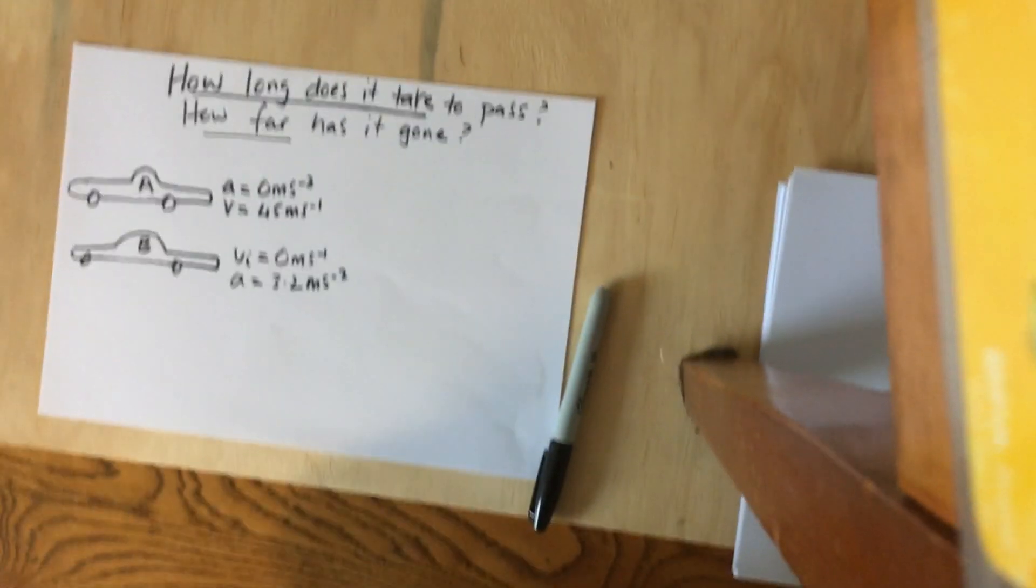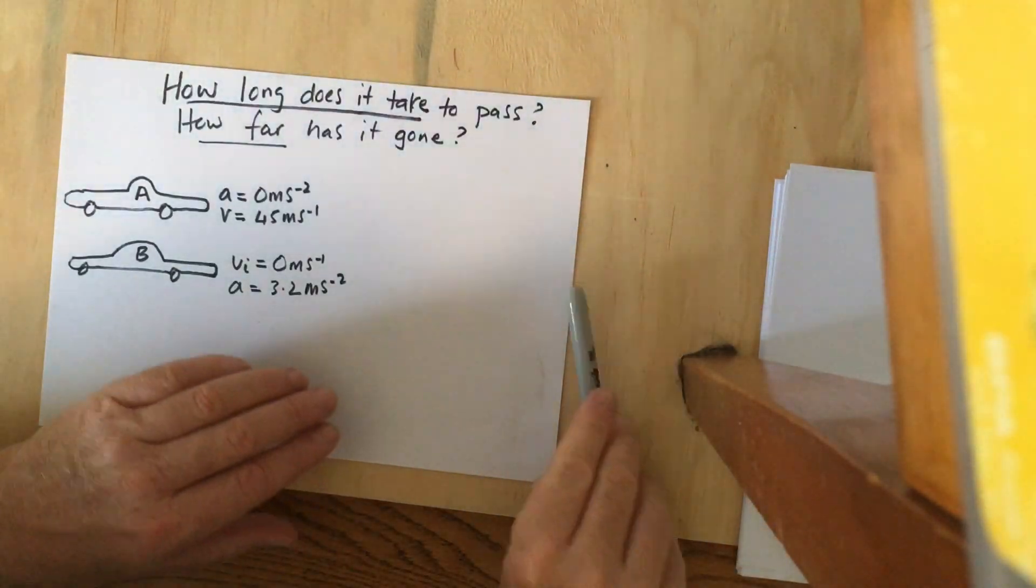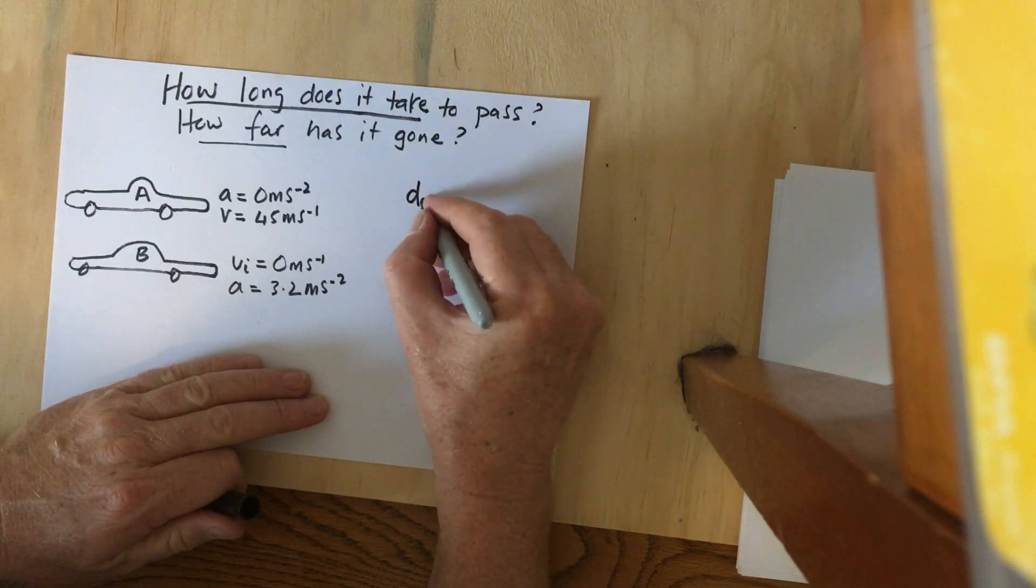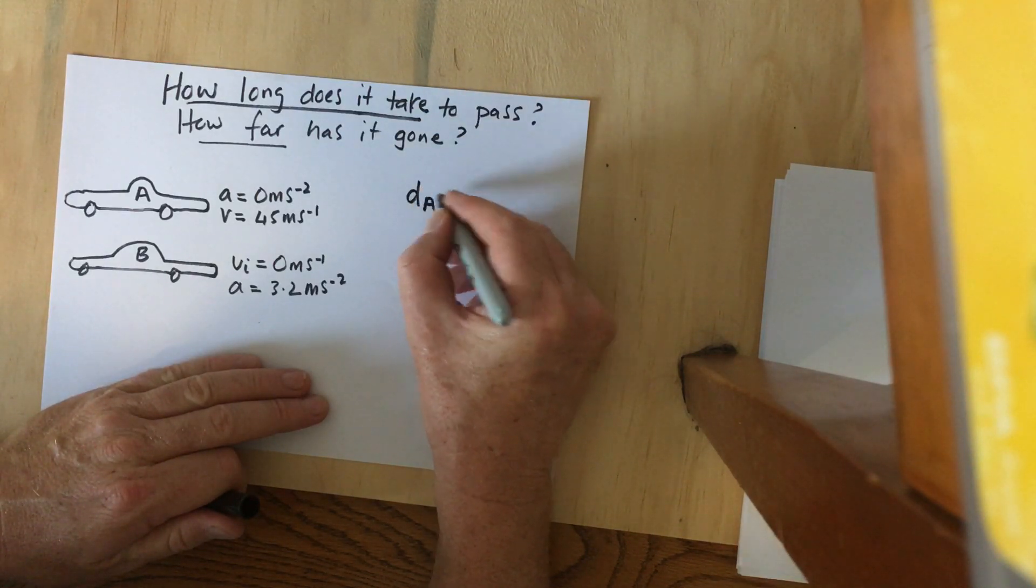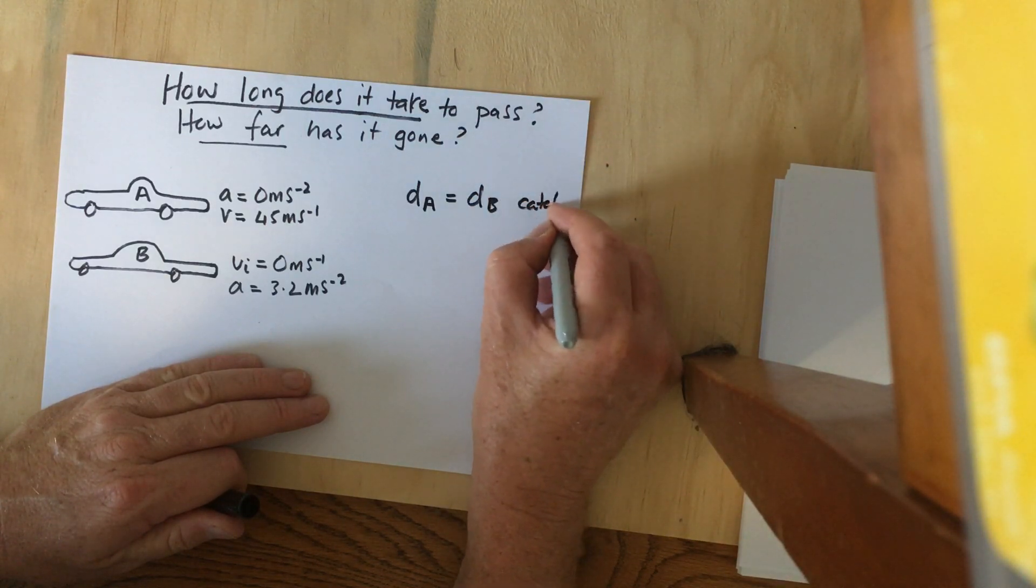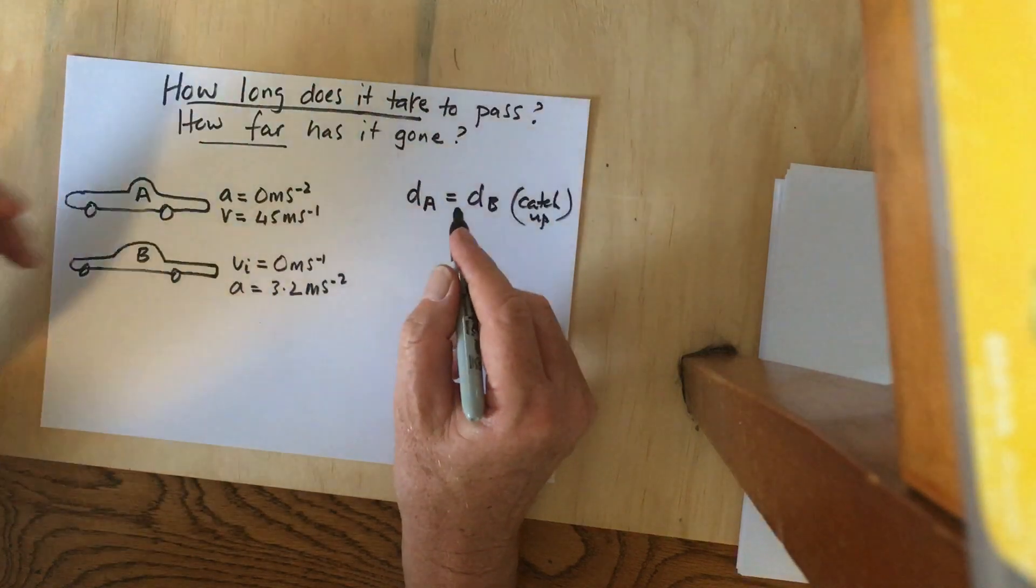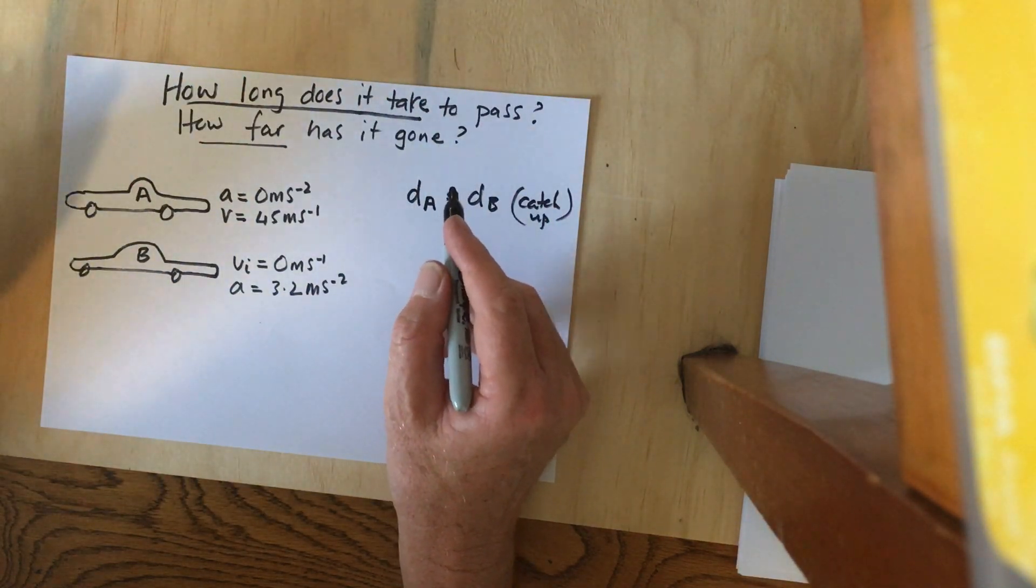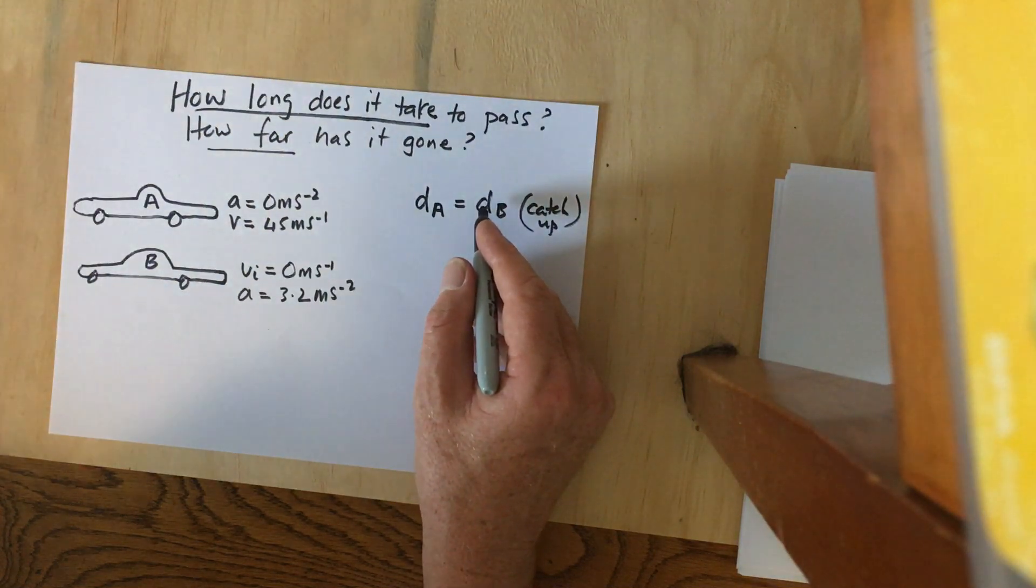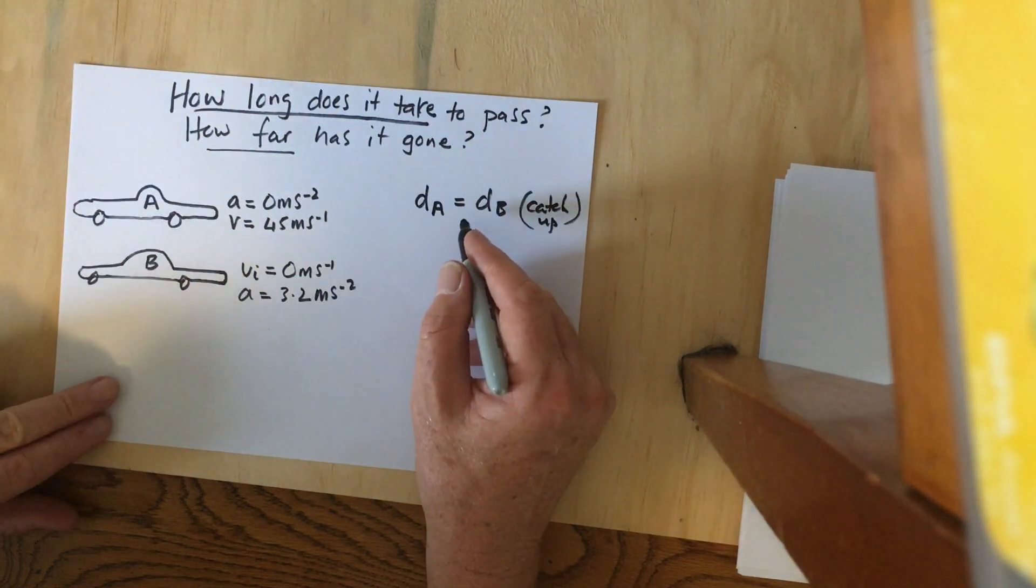The first thing to sort out is that the catch-up distance means dA equals dB. We know this because there's a certain time and distance when the two cars meet, and that's what we're going to calculate.